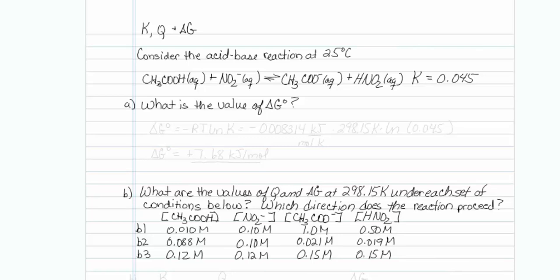This is how to relate K, Q, and free energy. Consider the acid base reaction at 25 degrees Celsius. All our materials are in aqueous phase, and we're given the equilibrium value of 0.045.